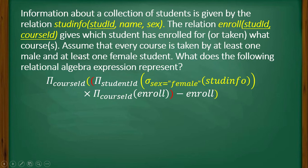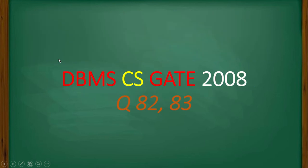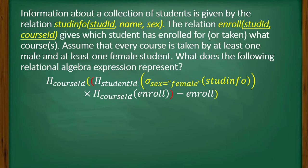Here is a question from DBMS 2008. Information about a collection of students is given by a relation called student_info. The student ID is the primary key, along with name and sex. There is also a relation called enroll, with student ID and course ID, which gives which student has enrolled for what courses. Assume that every course is taken by at least one male and at least one female student. What does the following relational algebra expression represent?